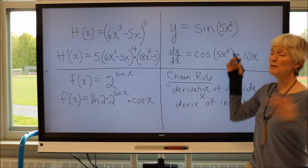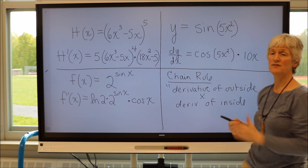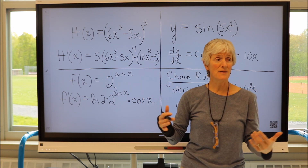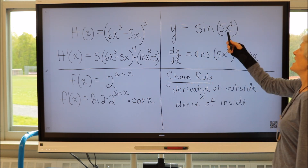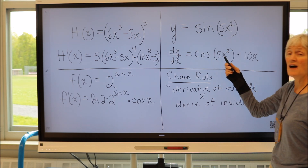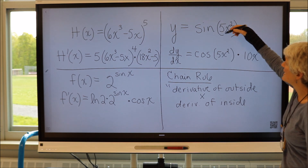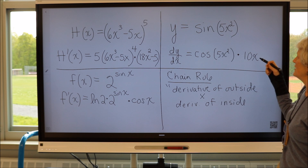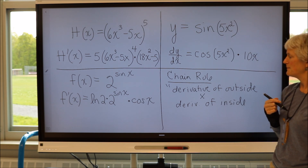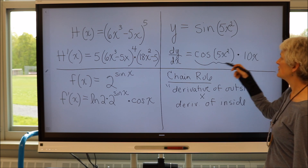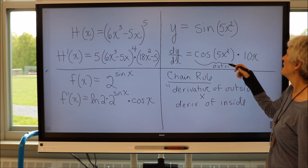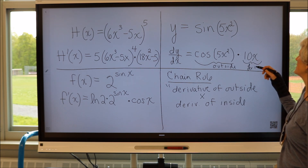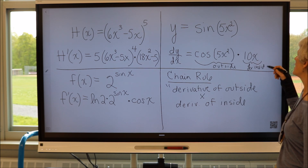So let's look at this. My outside function is the sine of something. How do we take the derivative of the sine of something? The derivative of the sine of something is the cosine of something. So the derivative of sine of 5x squared is cosine of 5x squared times the derivative of the inside function. My inside function is 5x squared, and the derivative of 5x squared is 10x. Here's the derivative of the outside function, and here's the derivative of the inside function. That's our chain rule.